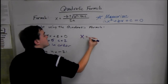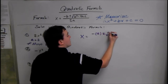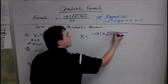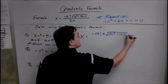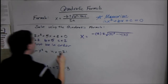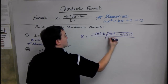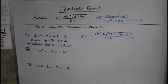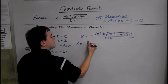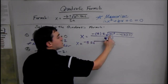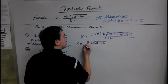x equals negative b, so negative 5, plus or minus the square root of 5 squared — because it's b squared — minus 4ac, so minus 4 times a, which is 2. Always use parentheses when you're plugging numbers in. And c is 2, all over 2a, so 2 times 2. Then you just simplify this until you can't anymore. We have x equals negative 5 plus or minus the square root of 25 minus 4 times 2 times 2, which is 16. So 25 minus 16 over 4.